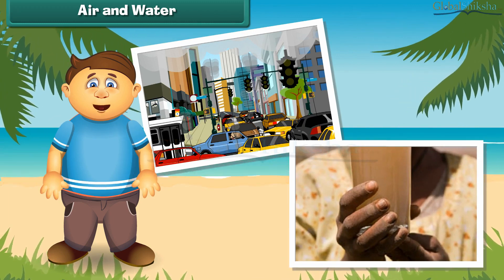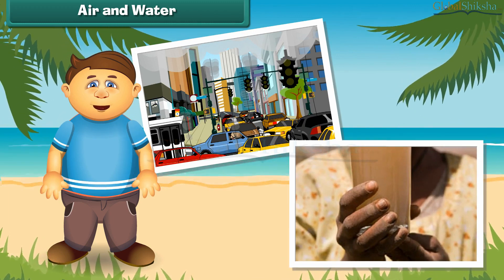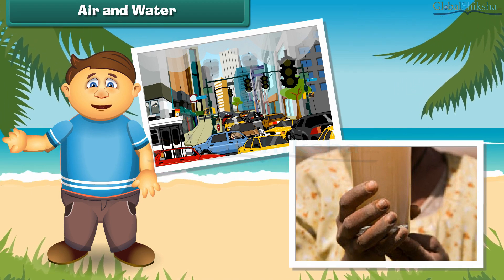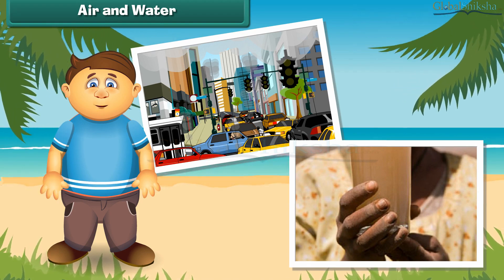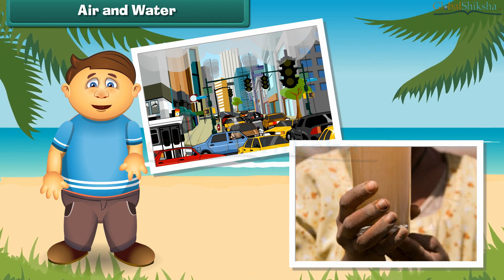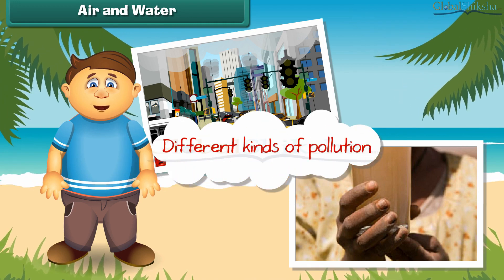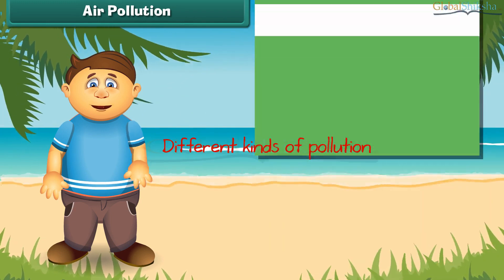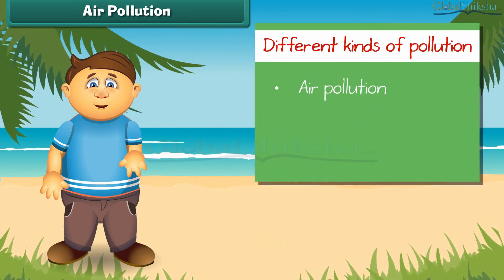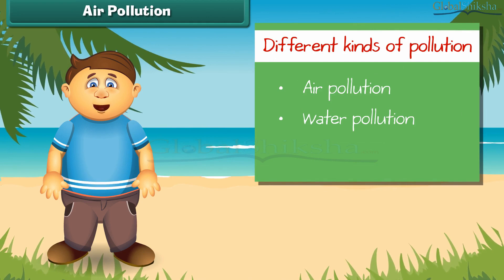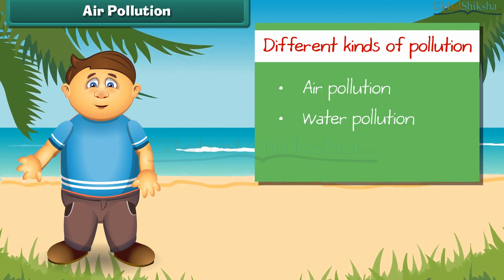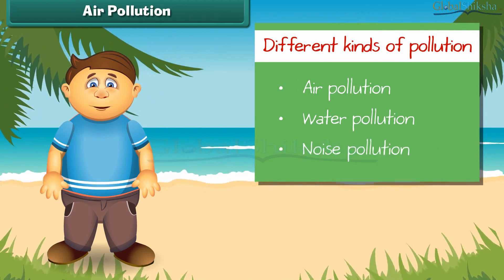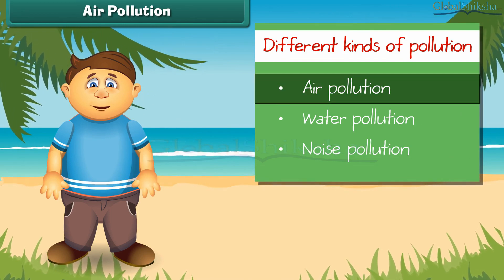Friends, as we all know, air and water mainly support life on the earth, but now these two are getting dirty day by day. As a result, there is no fresh air to breathe and clean water to drink. So let us discuss in detail different kinds of pollution. Pollution is mainly of three types: air pollution, water pollution, and noise pollution.